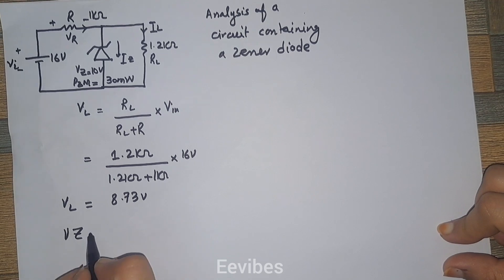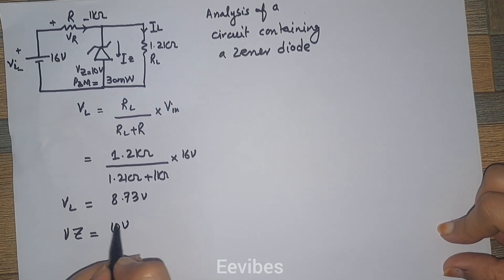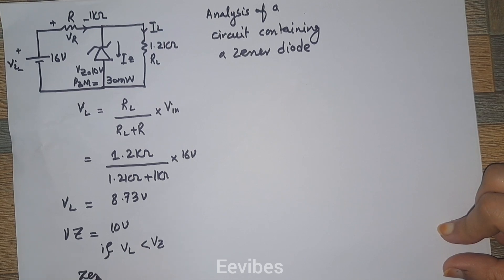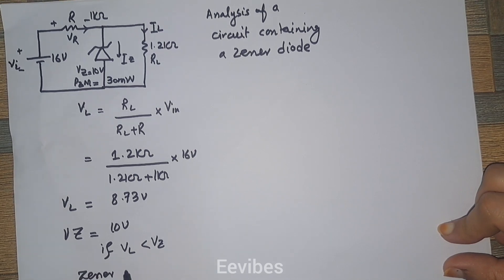In this case, the first step is to notice if VL is less than VZ. This means the zener is not providing any kind of regulation.